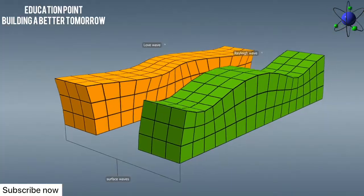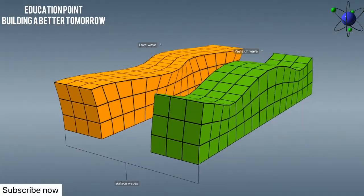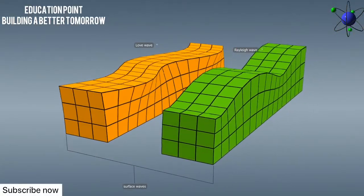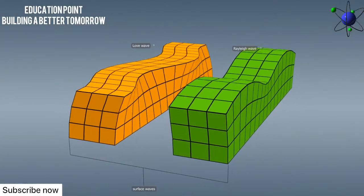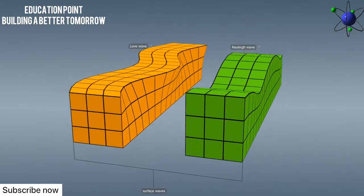Waves traveling along the surface of the Earth are called surface waves. They result from the interference of the P waves with the S waves. Surface waves travel at lower speeds than body waves, but their amplitude is greater. They cause the greatest damage.